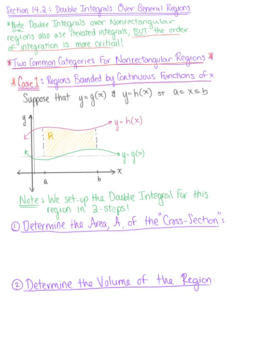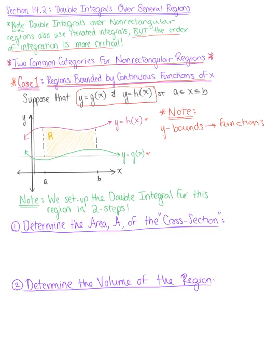In Case 1, we want to consider a region bounded by a continuous function of x. We're going to suppose that y equals g of x and y equals h of x, such that x is greater than or equal to a and less than or equal to b. We have a graphical illustration of this bounded region. This region is bounded by continuous functions of x, so your bounds on y are functions — both bounds or one bound could be a function — and the bounds on x are constant.